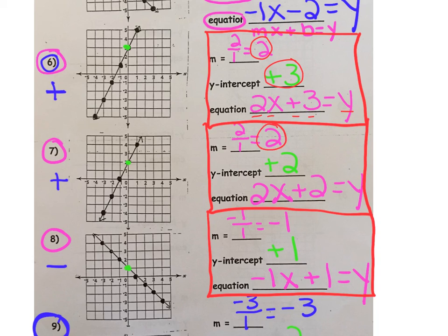For number seven, you should have gotten two for your slope, positive two for your intercept, two x plus two equals y for your equation.